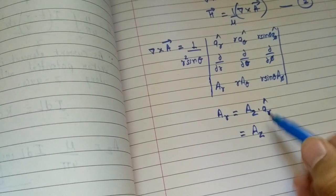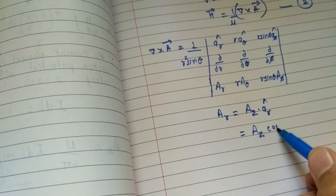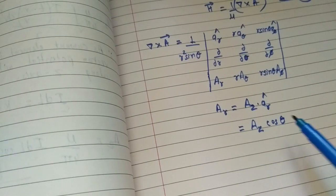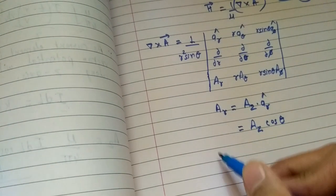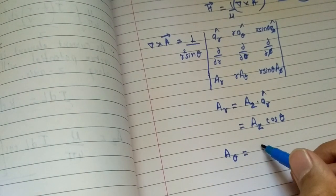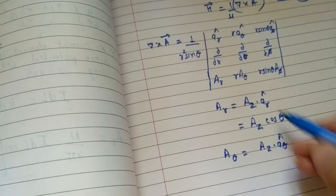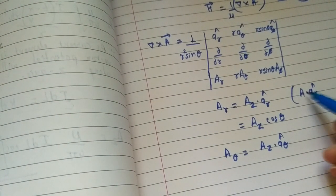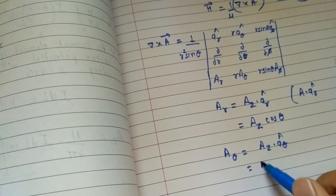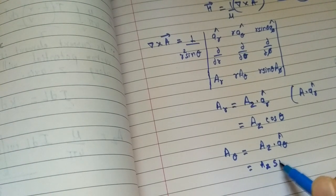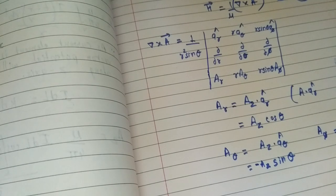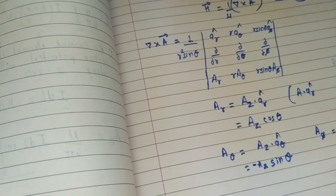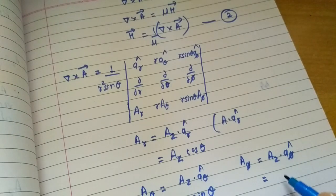So Ar = Az·cosθ. For Aθ, since ẑ · θ̂ = −sinθ, we get Aθ = −Az·sinθ. And for Aφ, since ẑ · φ̂ = 0 (they are at 90 degrees), we have Aφ = 0. Substituting these values into the curl expression for del × A, we get: del × A = 1/(r²·sinθ) times the determinant expansion.